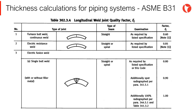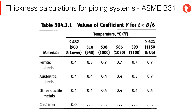The table shown on the screen presents the longitudinal weld joint quality factor, to be used to define the required wall thickness. Coefficient Y, dimensionless and temperature dependent, is obtained from the table shown on the screen. As observed, it depends on the operating temperature and the type of material used. It should be remembered that carbon steels and alloy steels are generally of ferritic structure, while most stainless steels used in industrial plants are of austenitic structure.